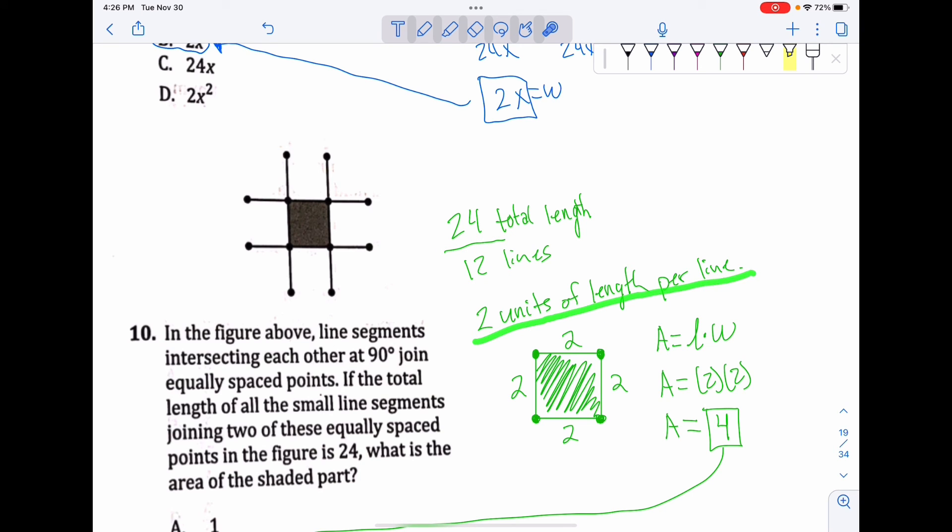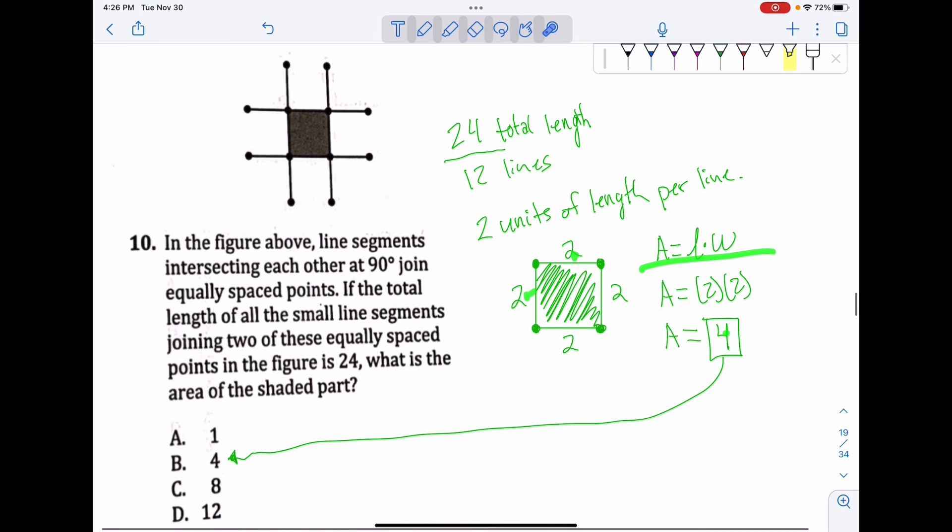What you have to do here is get 24 divided by 12, which gives you 2 units of length per line. So each one of these lines is equal to 2 units. We move it over here, so we have 2, 2, 2, 2. 2 times 2, it's 4. Long story short, B is your final answer.